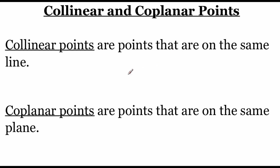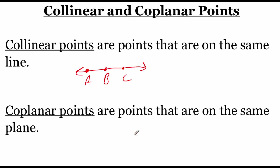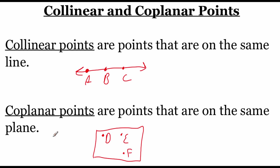Now while we're talking about lines and planes, I want to mention collinear points and coplanar points. Collinear points are just points that show up on the same exact line. So if we had a line with points A, B, and C on it, we would say that points A, B, and C are collinear. Coplanar works very similarly — if we had a plane with points D, E, and F on it, then these three points are coplanar because they're all on the same flat surface.